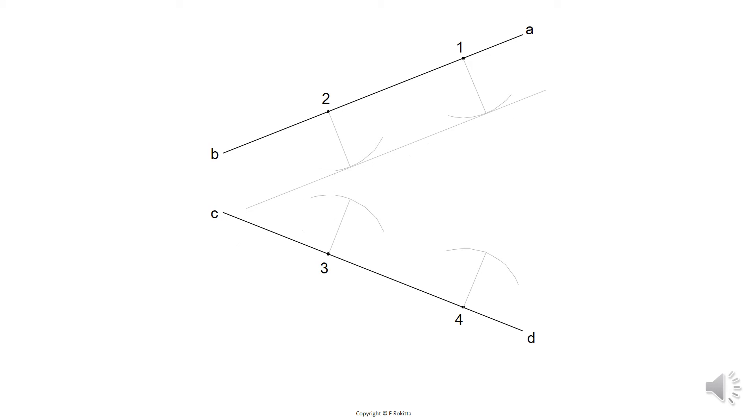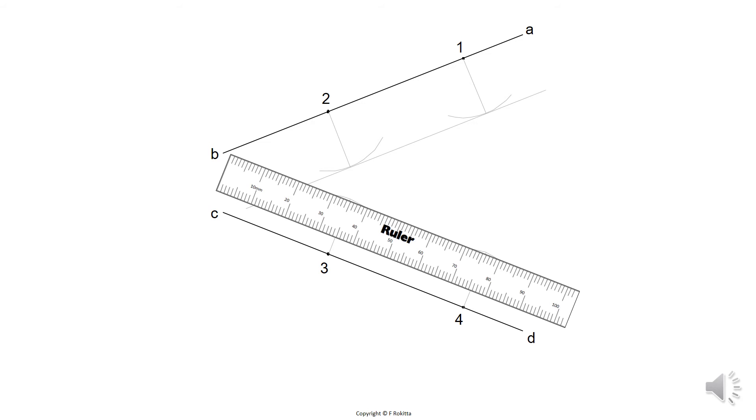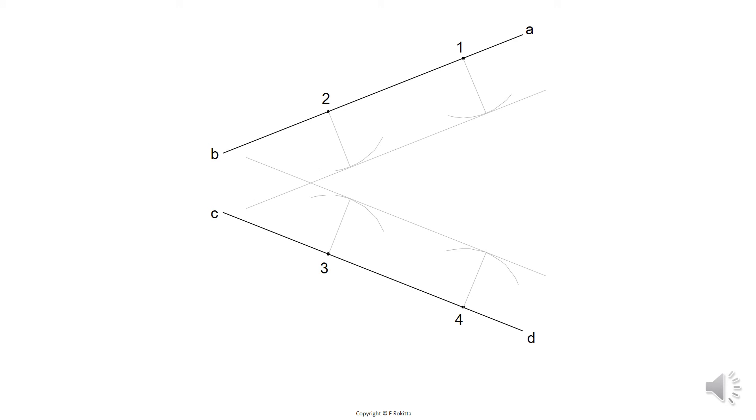Place your ruler now also parallel to line CD at the edges of the two construction arcs at number 3 and 4, and draw a construction line to intersect with the first one. Where the two lines intersect with one another you will place point O. This point is the center of the construction arc that will connect line AB and CD.